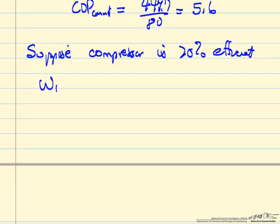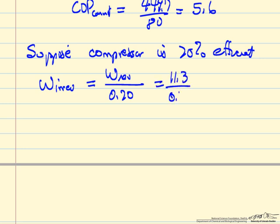So the work for an irreversible compressor, 70% efficient, the work for a compressor is the work, the reversible value divided by efficiency. We're going to take more work to carry out the same amount of pressure change. So we have to add 16.1 BTUs per pound.